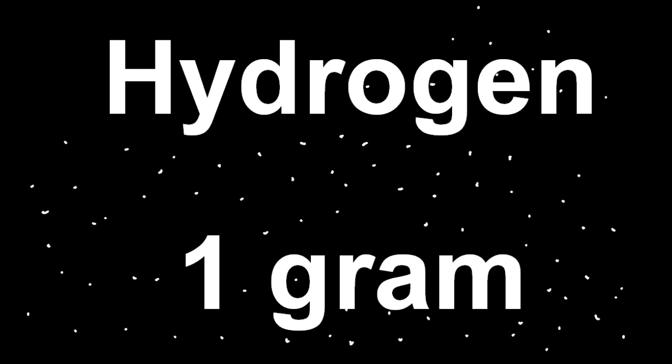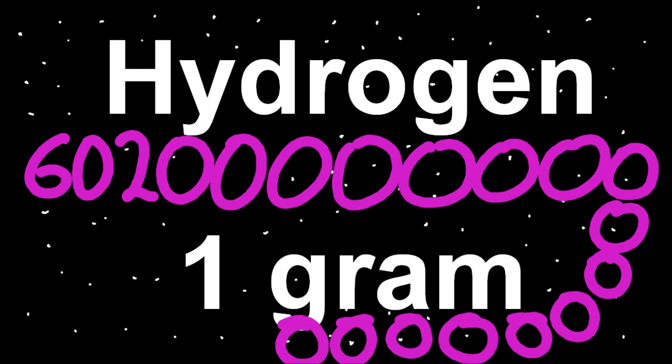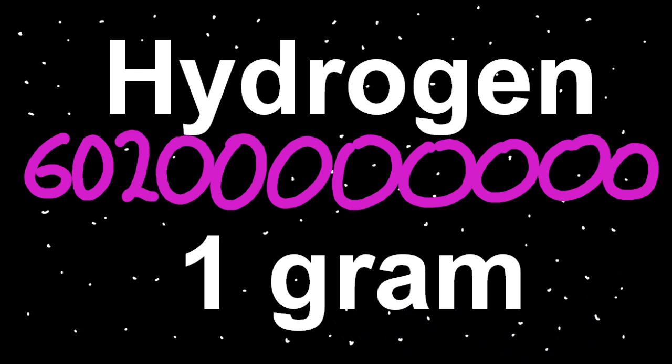Count them if you want. I'm waiting. All right. That's the answer. Six with 23 zeros after it. That is a huge number, but that's how many hydrogen atoms in one gram of hydrogen atoms.